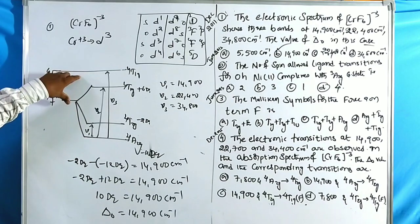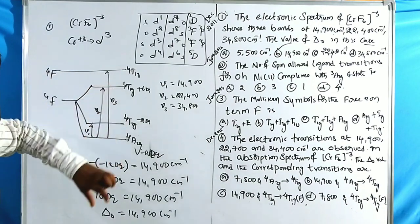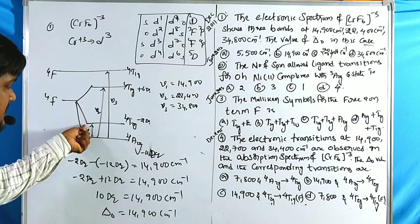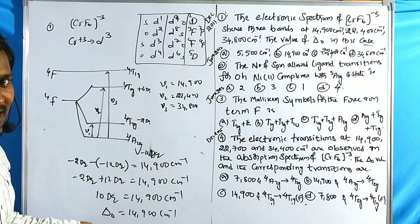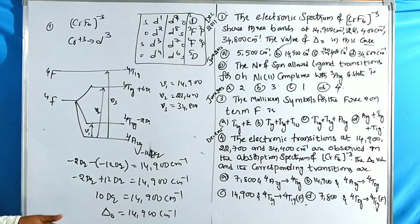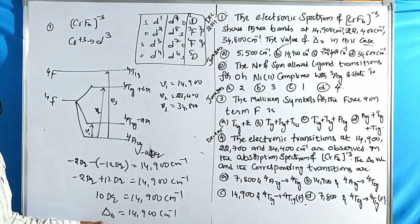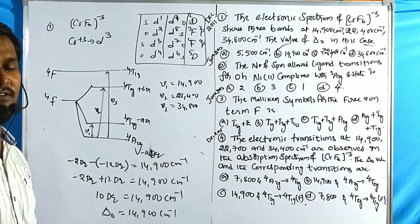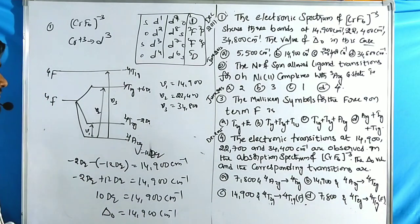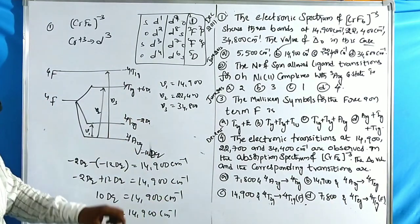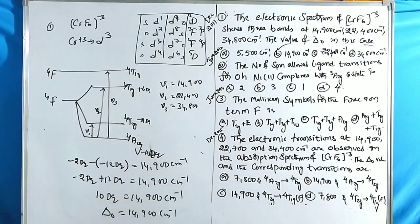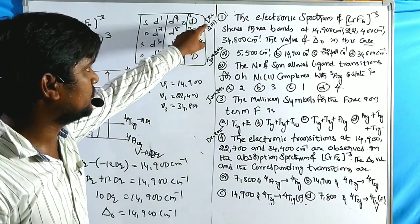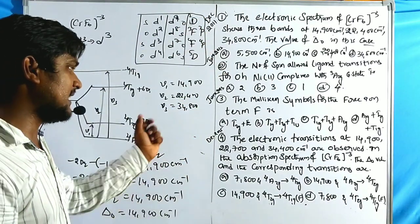For similar-to-octahedral f-term splitting, the first transition gives our ΔO value directly. For opposite terms the values change — we'll cover that after this. The first question answer is B, and this question appeared in December 2011 and again in December 2015.